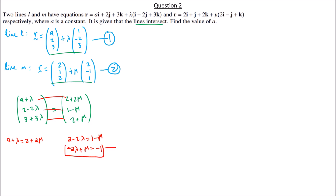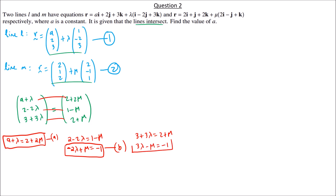z-component: 3 + 3λ = 2 + μ, which rearranges to 3λ − μ = −1 (equation C). We solve equations B and C simultaneously by elimination.